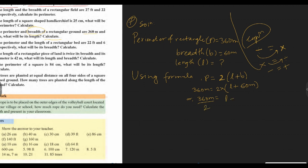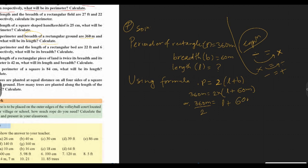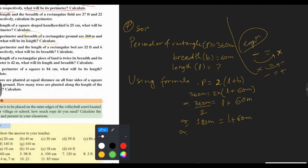This equals L plus B. B is 60 meter. When you divide 360 by 2, you get 180 meter.